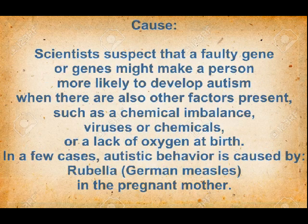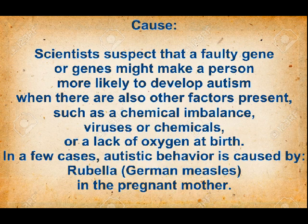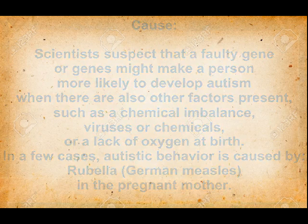What causes autism? Scientists suspect that a faulty gene or genes might make a person more likely to develop autism when there are also other factors present, such as a chemical imbalance, viruses or chemicals, or a lack of oxygen at birth. In a few cases, autistic behavior is caused by rubella in the pregnant mother.